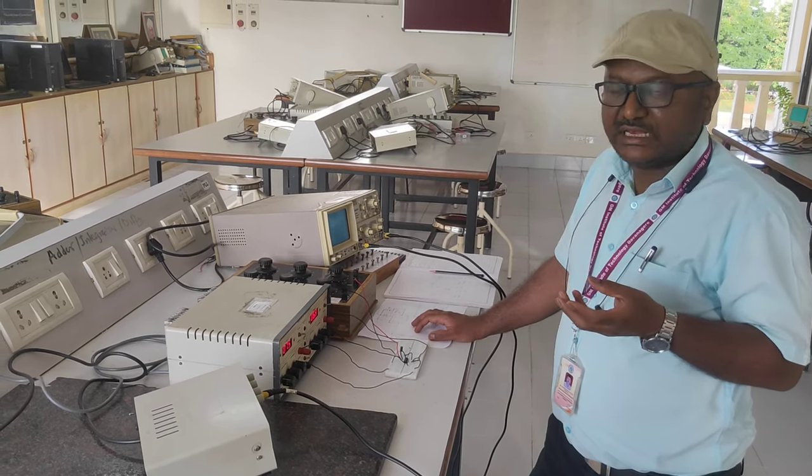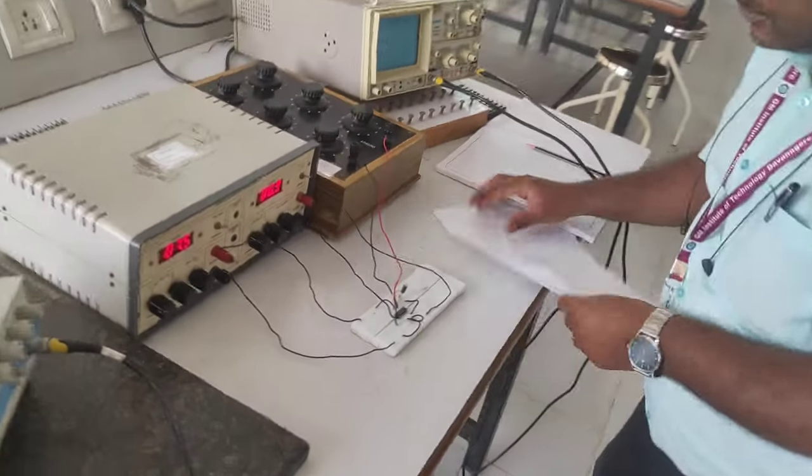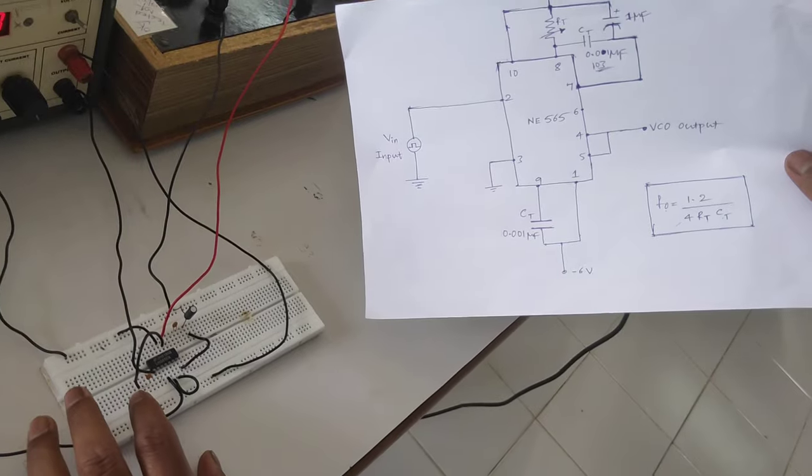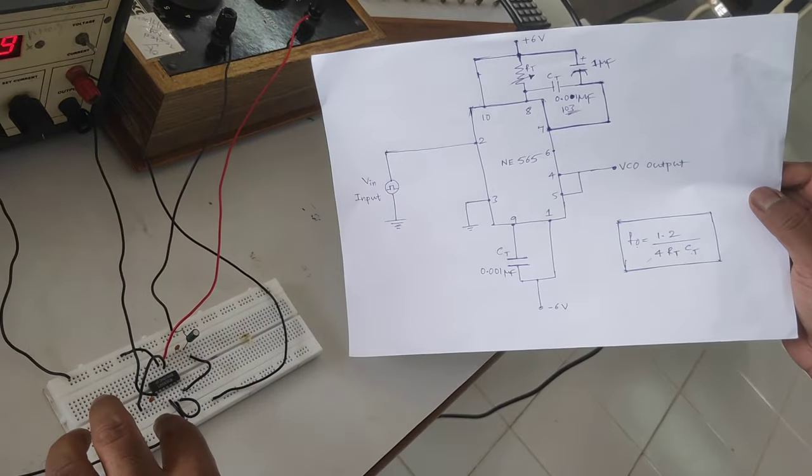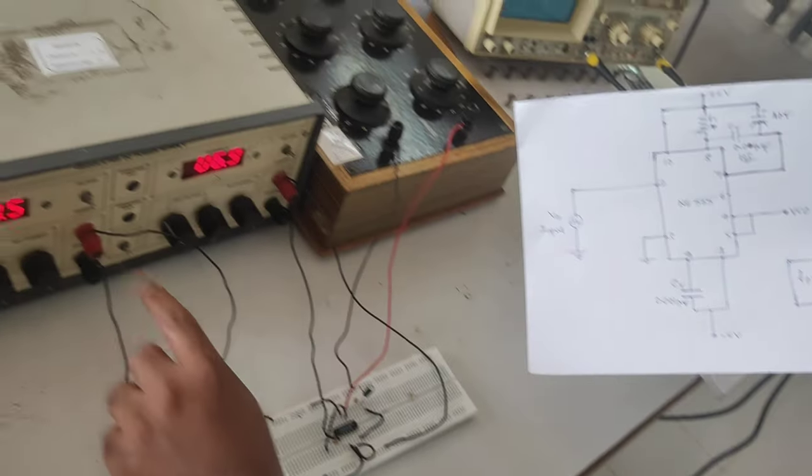Circuit diagram is already connected. Just go through the circuit. This is the 565 IC I have used for PLL experiment. The circuit is made as per the circuit diagram. Here I am showing you the circuit.